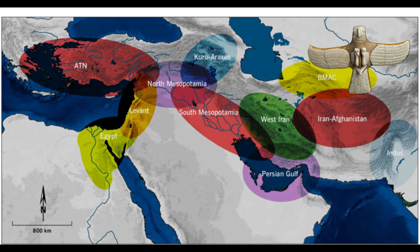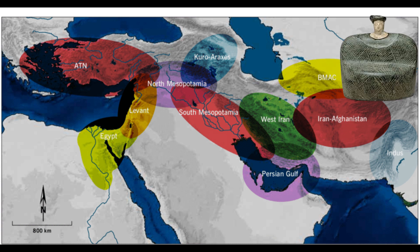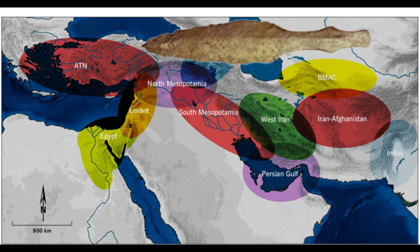Shah Tepe's connections to the BMAC culture are evident in both material artifacts and shared practices. While Shah Tepe maintained its distinct identity, the presence of BMAC-style items, such as stone seals and ornamental objects, implies trade or cultural diffusion. These connections place Shah Tepe within the broader sphere of interaction between Central and South Asia, illustrating its role as a cultural crossroads during the Bronze Age.